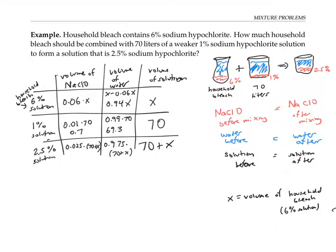Now I've already used the fact that the volume of solutions before added up is the volume of solution after in writing 70 plus x in this box. But I haven't yet used the fact that the volume of the sodium hypochlorite is preserved before and after. So I can write that down as an equation. So that means 0.06x plus 0.7 is equal to 0.025 times 70 plus x. Now I've got an equation with a variable, I'll try to solve it.